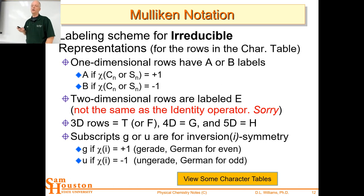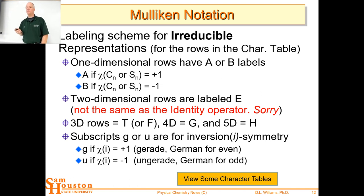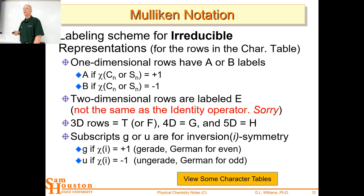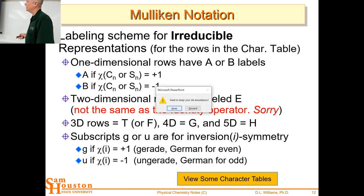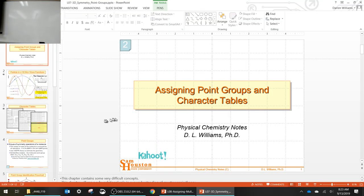The subscripts G or U represent symmetry under inversion. G and U come from German — Gerade means even, and Ungerade means uneven or odd. So G and U is German for even or odd. I may sometimes say 'gerade' and you'll wonder what I said — I'm speaking German. That's about all the German I know, along with 'wie geht's.' That's the Mulliken notation, and now we'll learn how to assign it.